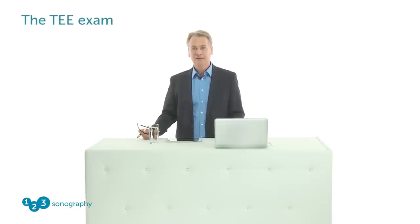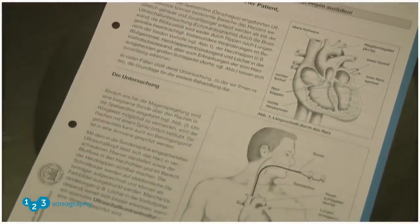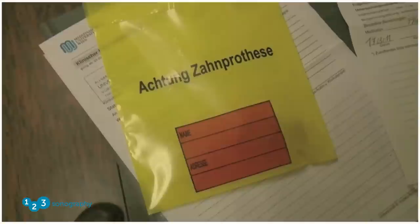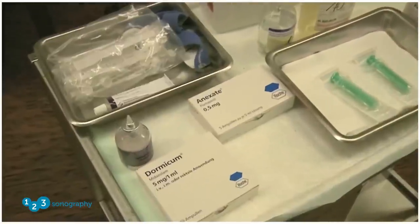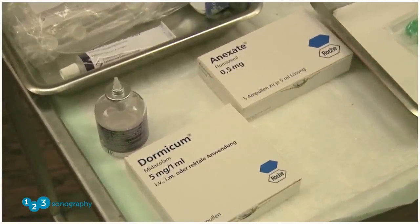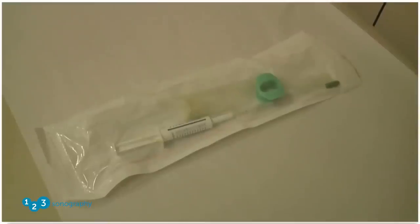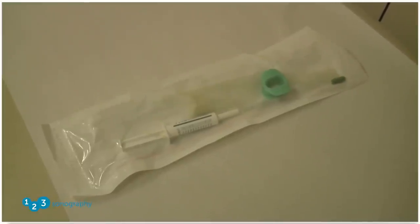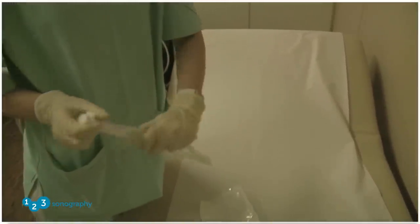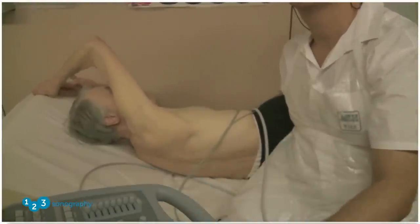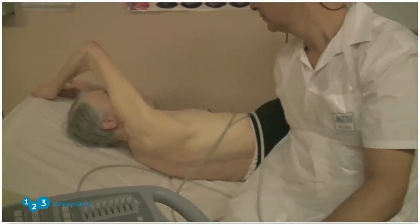Are you ready for your first transesophageal echo? Before we start, you need to know how to prepare the patient. First, we get written consent, explaining the procedure and its risks. Patients must remove false teeth. We prepare midazolam for sedation and its antagonist flumazenil in case we need to reverse. We use lidocaine spray to anesthetize the pharynx and cover the transesophageal probe with a condom filled with gel. We always perform a transthoracic echo first — this speeds up the procedure because we know what we're looking for.